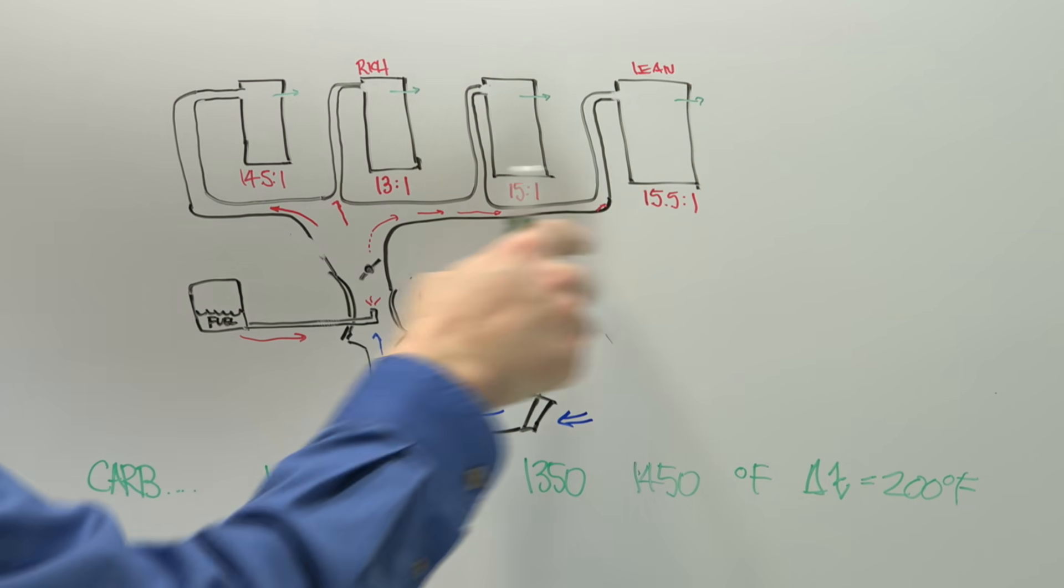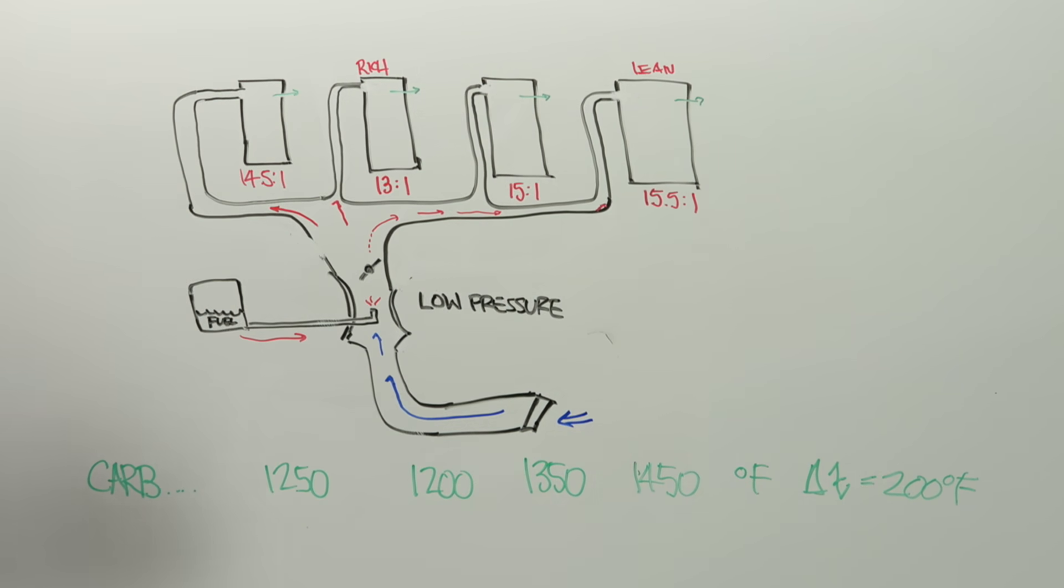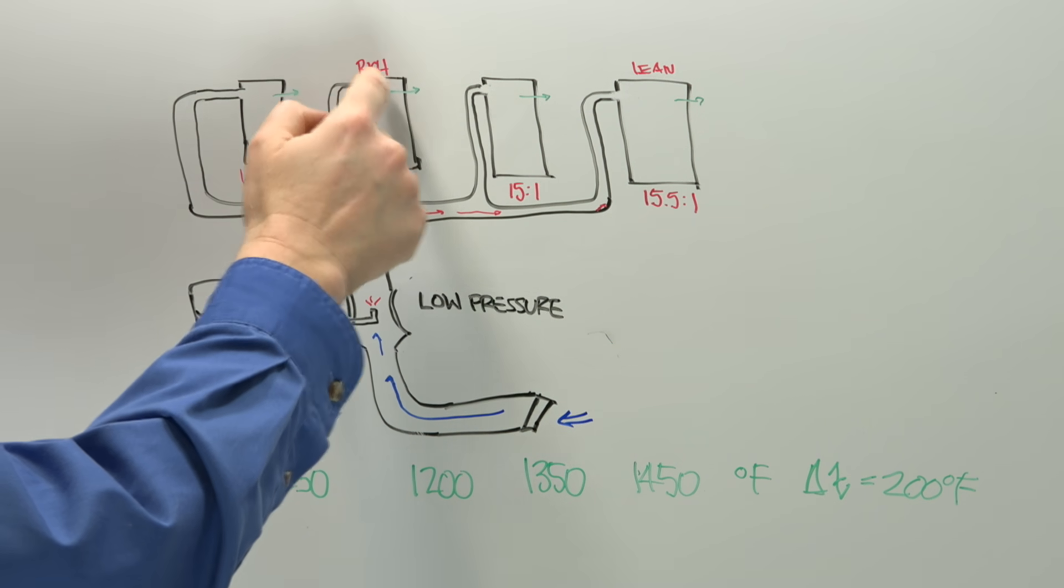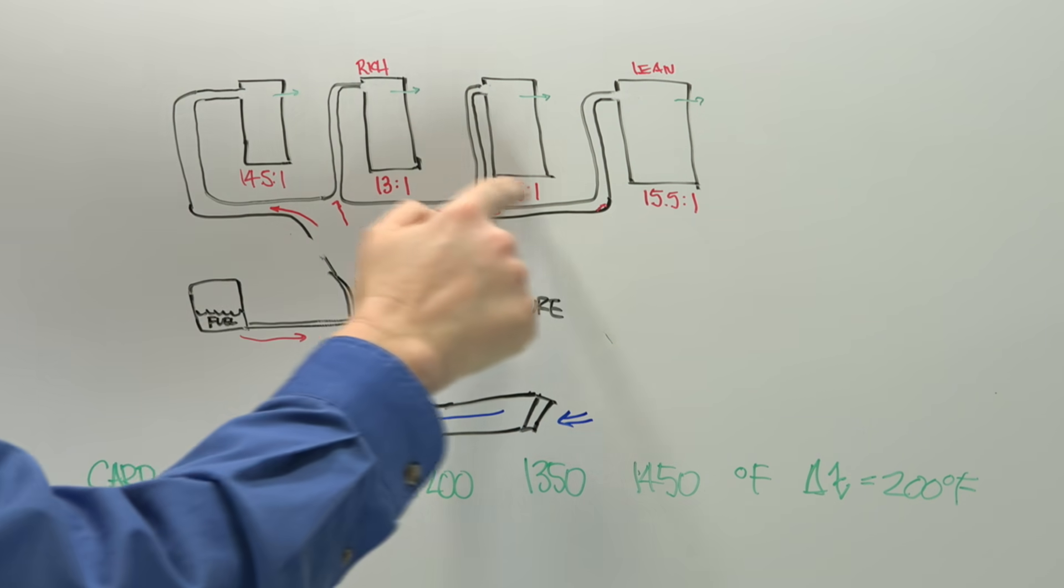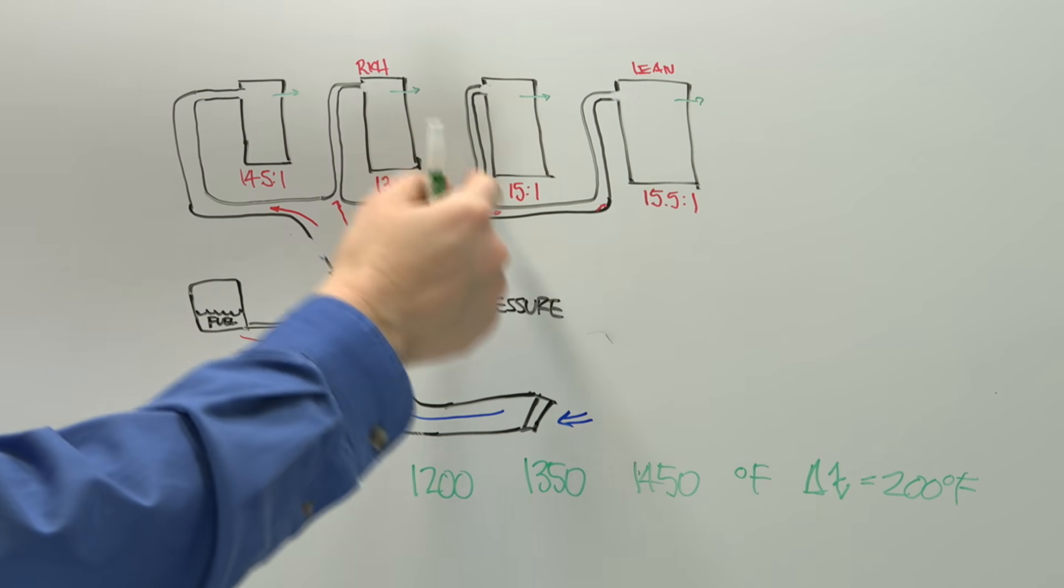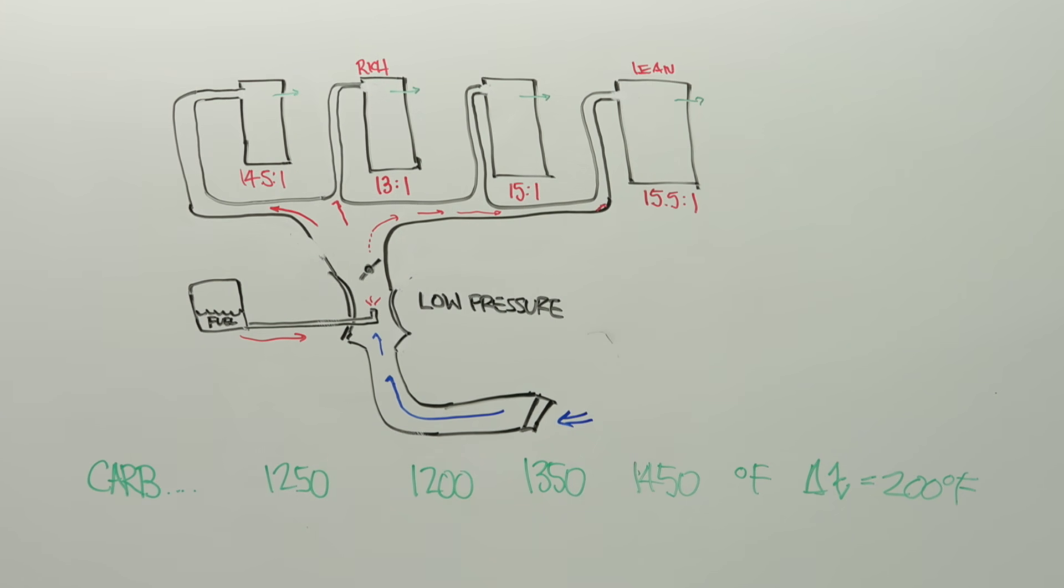And that's not uncommon with a carbureted engine, to have a huge difference in terms of temperature between each of those cylinders. That's because it's got different amounts of mixture in each one. As I mentioned, that is also going to greatly have an effect upon the power output of each of those cylinders.